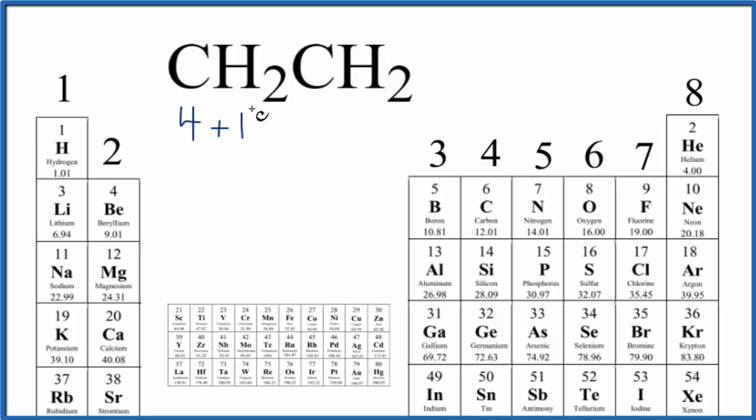but we have these two hydrogens. So multiply that by two, and then again, four plus one times two. And that gives us a total of 12 valence electrons for the CH2CH2 Lewis structure.